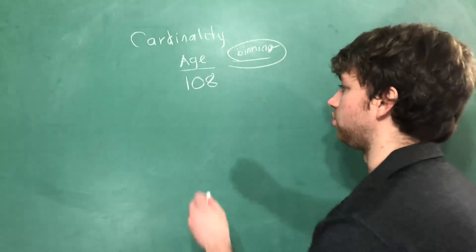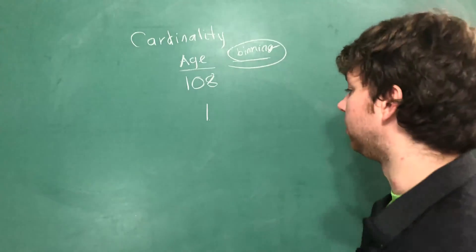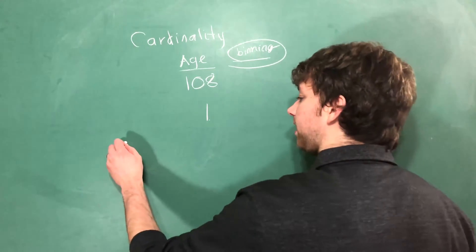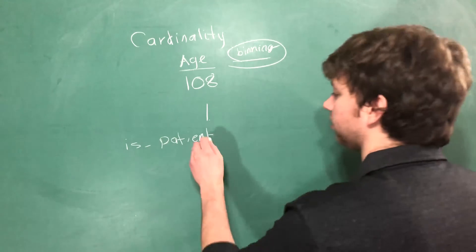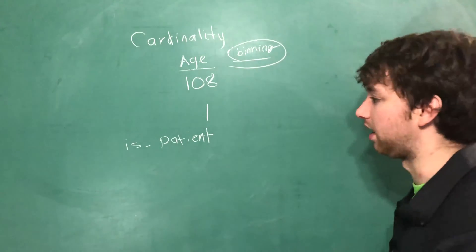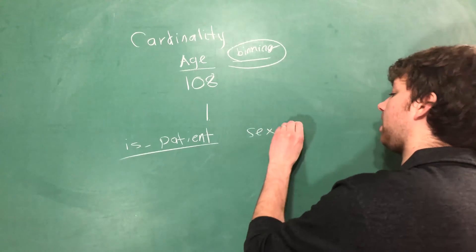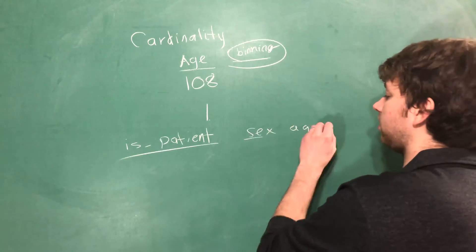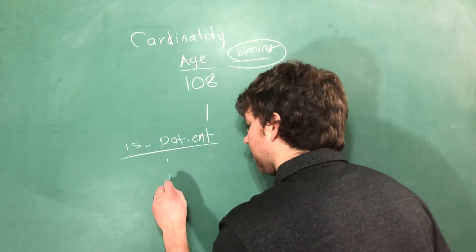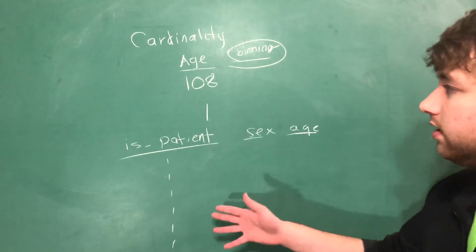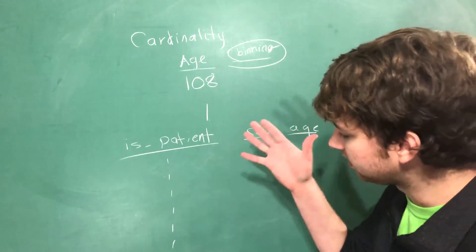But there is another cardinality issue and that is when the cardinality is 1. So for example, in our analytics base table we might have a column or a feature 'is patient' and this is for a doctor's office, so it's not about how much patience someone has. We have 'is patient' and then we have sex and then age and then all that other good stuff. Okay, now let's look at this 'is patient'. Every single person in here has the value 1. So the cardinality is 1.